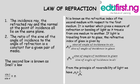The refractive index is a number which gives a measure of the refraction or bending of light as it travels from one medium to another. If light is traveling from air to glass, the refractive index of glass is given by the sine of the angle of incidence in air divided by the sine of the angle of incidence in glass.